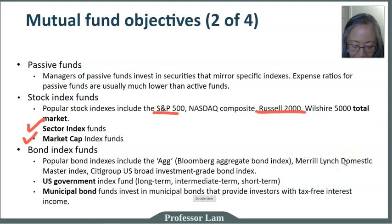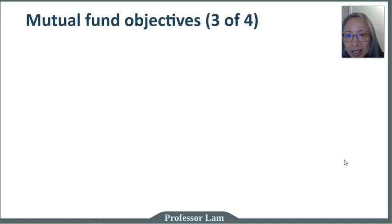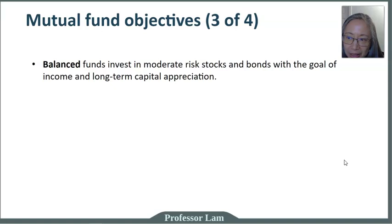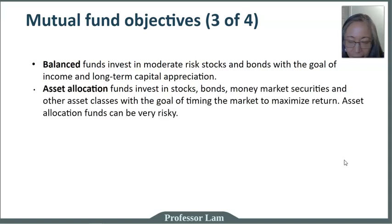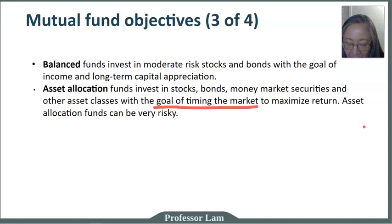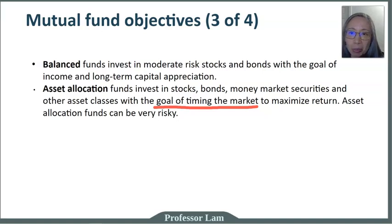To recap, passive mutual funds tend to have much lower expense ratios — that's their main selling point. Besides active and passive funds, there are balance funds, which balance between capital appreciation and income and tend to invest in both stocks and bonds. There are also asset allocation funds — though the name is tricky because these funds actually try to time the market, making them quite risky. They change the asset allocation in anticipation of market conditions: if they think stocks will outperform bonds, they allocate more to stocks, and vice versa. A more accurate description would be a market timing fund.